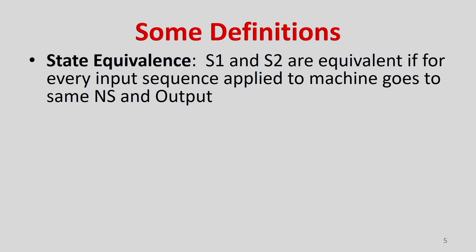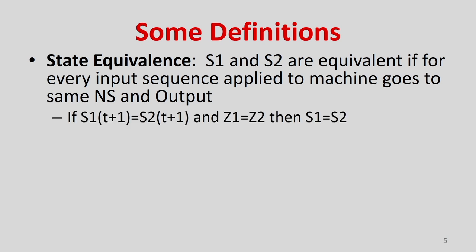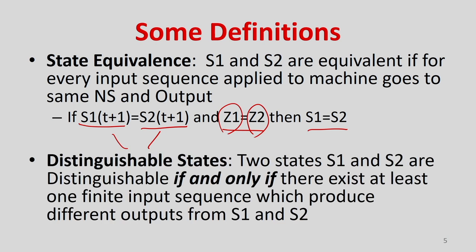Formally, S1(t+1) equals S2(t+1) — the next state from both S1 and S2 for the same input goes to the same next state. Also, the output of state S1 (call it Z1) and the output of state S2 (call it Z2) must be equal: Z1 = Z2. Then we can say S1 is equivalent to S2.